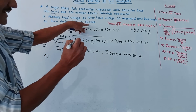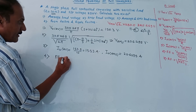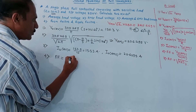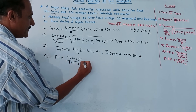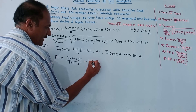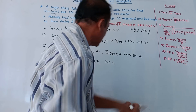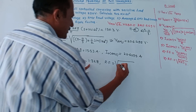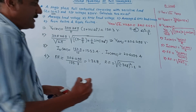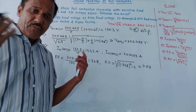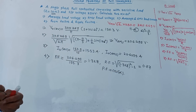Fourth part: form factor and ripple factor. Form factor = V0_rms / V0_average = 206.295 / 155.3 = 1.328. Ripple factor = √(FF² − 1) = √(1.328² − 1) = 0.87. Power factor is not asked in this question, but if it were, the formula is cos α, that is cos 60°.